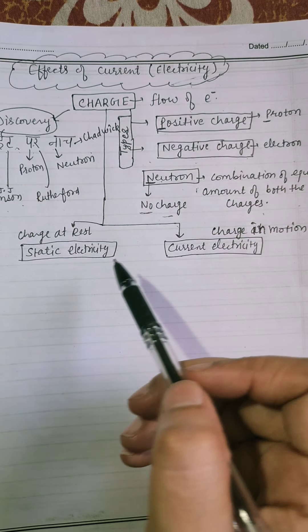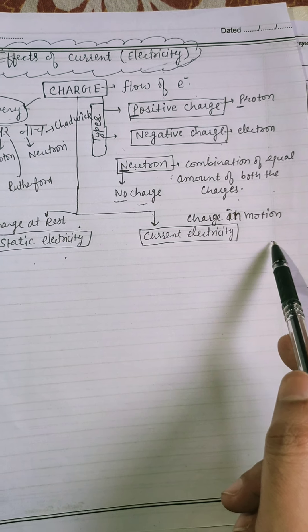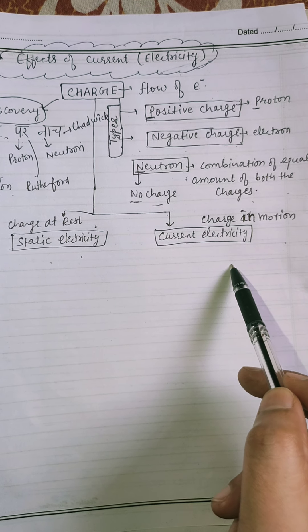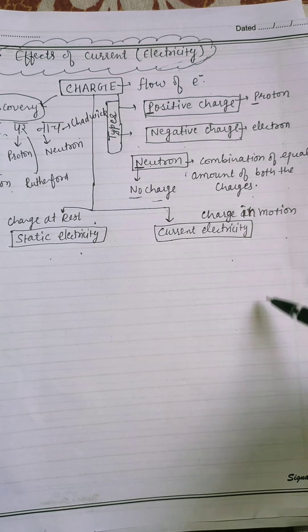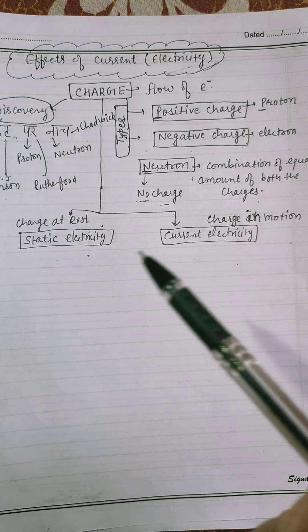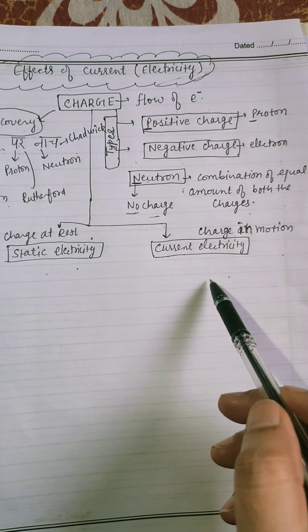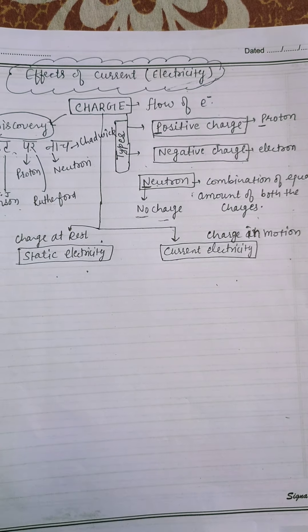Now, charges at rest is known as static electricity. And when charges in motion is known as current electricity. Today, we study in detail current electricity. And at higher level, you will study about static electricity. Before going to this topic, we study properties of charges.